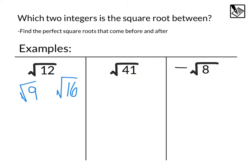So if we take those actual values, square root of 9 is 3, square root of 16 is 4, we can say that square root of 12 will be somewhere between 3 and 4, and that's what we're looking for here, the two integers that square root of 12 is in between.